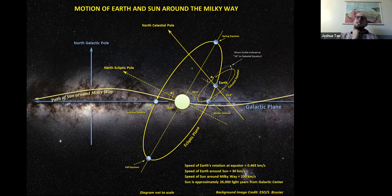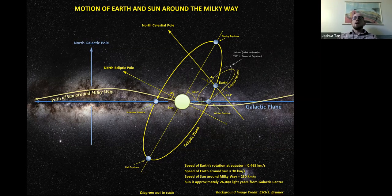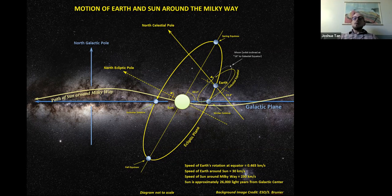We don't often notice this motion because the distances in our galaxy are so great that we don't see changes from night to night or even over a human lifetime — 200 million years is a very long time. But by measuring the motions of stars carefully and making interesting observations of how everything is organized around our own star, we've been able to determine what direction the sun is moving through the galaxy.